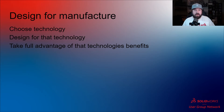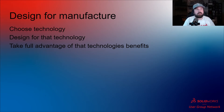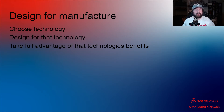You want to design for your manufacturing process. First choose your technology — whether it's injection molding, vacuum forming, roto molding, or any other manufacturing process. Design for that technology and take full advantage of its benefits. Once you understand what you can get away with in a given technology, you can really push the limits of your parts.